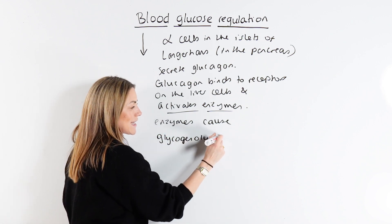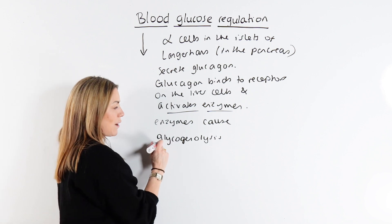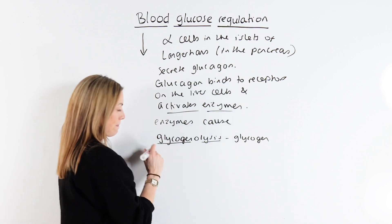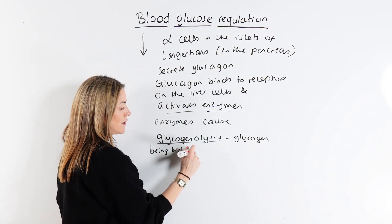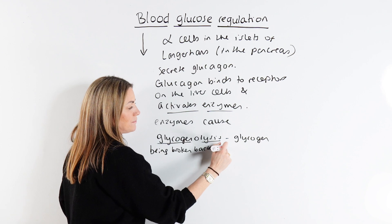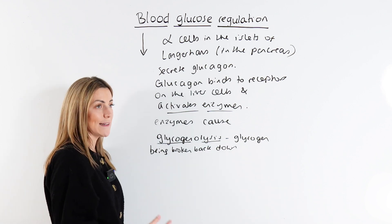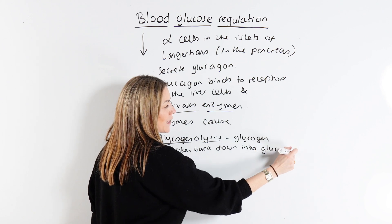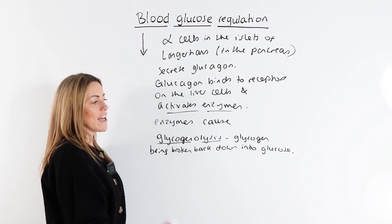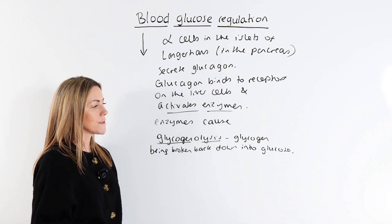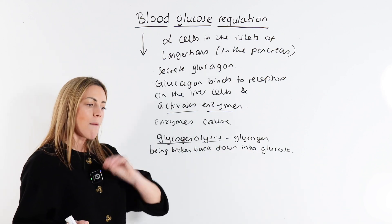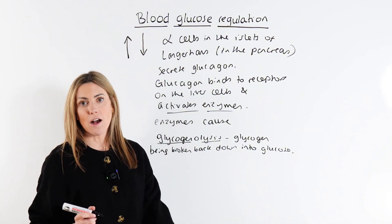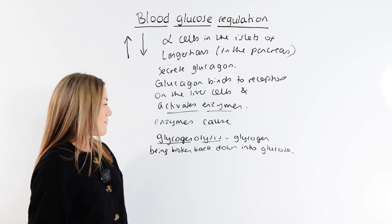These enzymes cause glycogenolysis — breaking the word down, you have glycogen and lysis — so it's glycogen being broken back down, or hydrolyzed, into glucose. That glucose can then diffuse from the liver cells back into the blood to help increase our blood glucose level and return it back to normal.